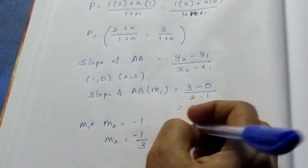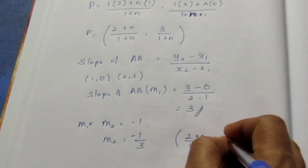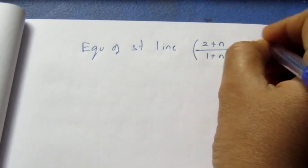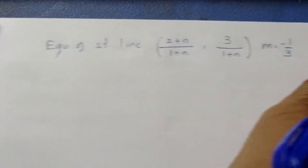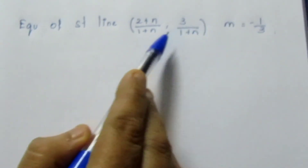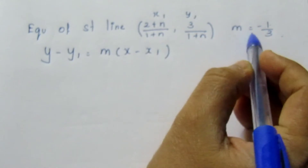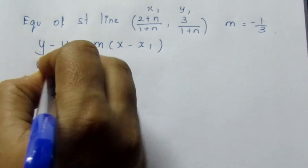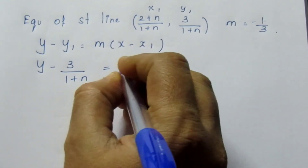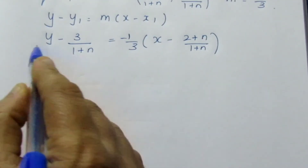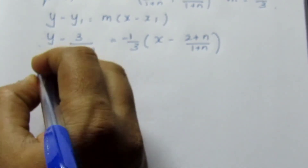Now we have found the slope M2 = -1/3, and we know the point passing through it is ((2 + N)/(1 + N), 3/(1 + N)). Using the point and slope we can write the equation. If a point and slope are given, the equation of a straight line is y - y1 = m(x - x1). So substitute: y - 3/(1 + N) = -1/3 × (x - (2 + N)/(1 + N)).